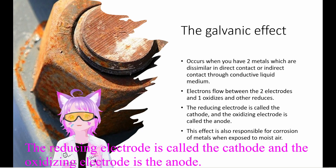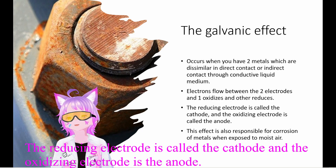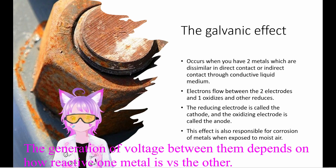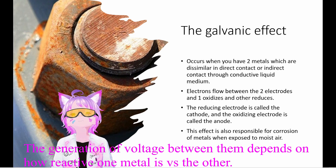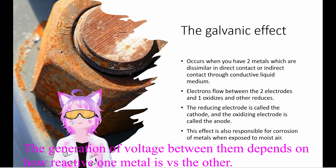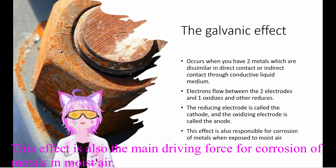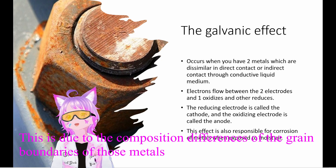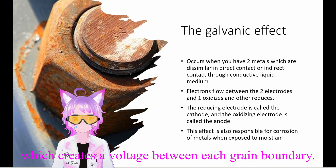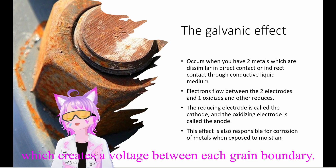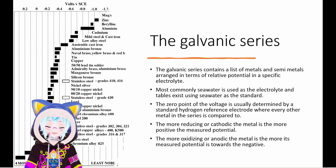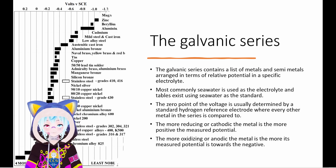The reducing electrode is called the cathode, and the oxidizing electrode is called the anode. The generation of voltage between them depends on how reactive one metal is versus the other. This fact is the main driving force for corrosion of metals in moisture, due to the composition difference of the grain boundaries between the metals, and that creates a voltage between its grain boundaries.